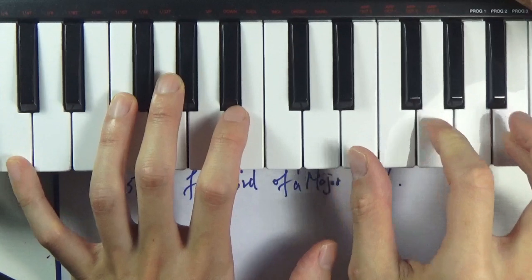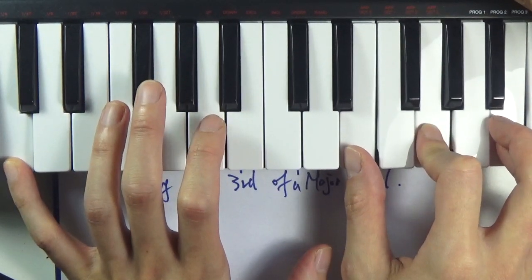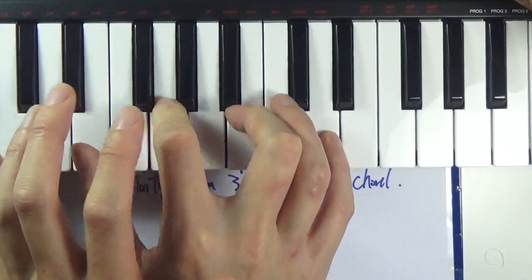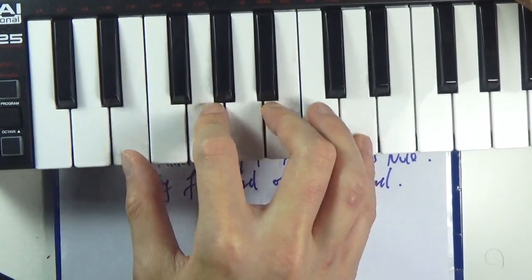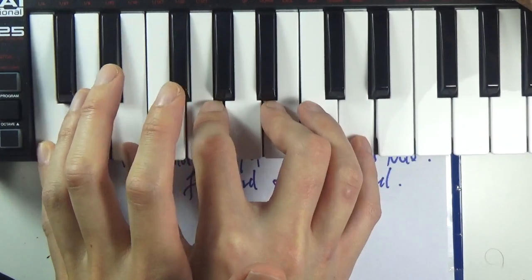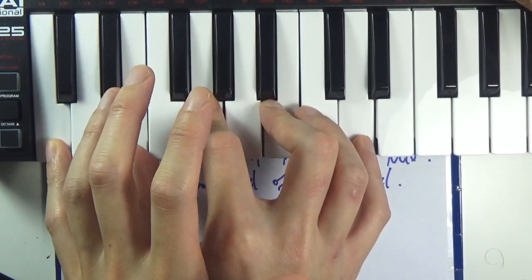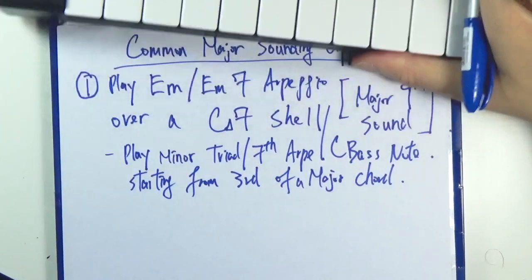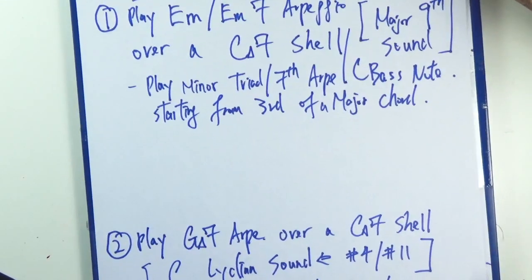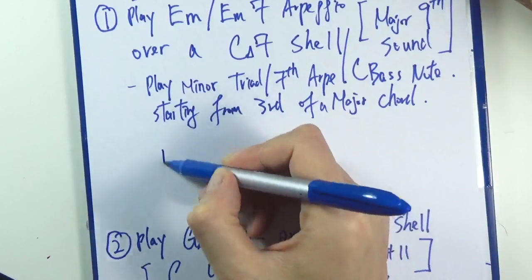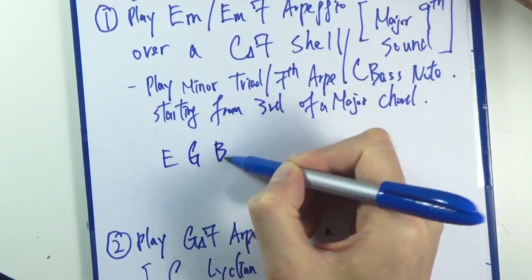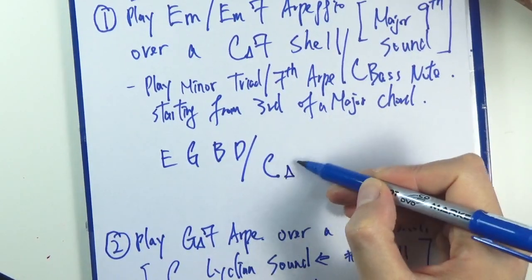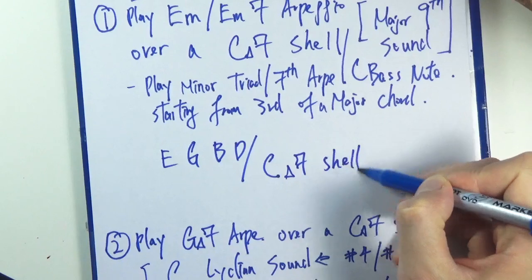It can be just a C bass note — that's fine. This one is really common when you are trying to produce a C major seven sound or a C major nine sound. E minor seven is really common, worth memorizing, and will appear in the test at the end of the chapter. If I write out the chord tones: E, G, B, D over C — over a C major seven shell or just a C bass.